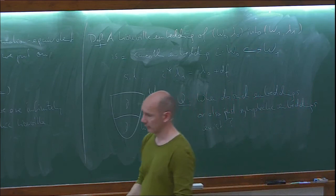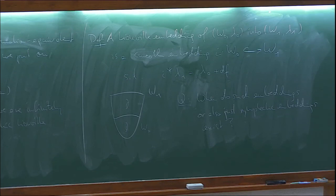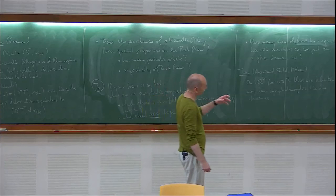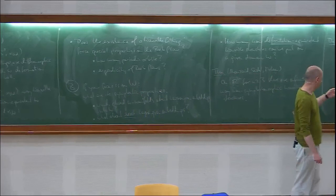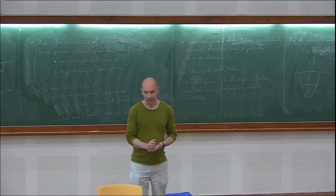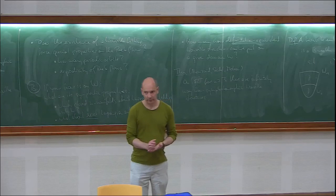You could also just ask for symplectic embeddings, and the question would be when do such embeddings exist. You start with two domains and ask when you can embed one into the other. If W_0 is a unit disk cotangent bundle of a manifold, and that embeds into W_1, then since the disk cotangent bundle contains the zero section as a Lagrangian submanifold, that implies a Lagrangian embedding. Conversely, if you have a Lagrangian embedding, the neighborhood theorem tells you that some disk bundle actually sits inside the ambient domain. So this is more general since W_0 doesn't have to be a disk cotangent bundle.